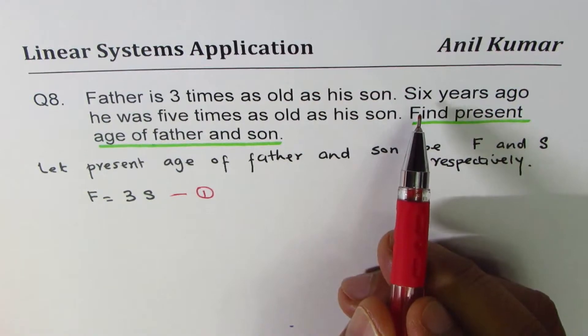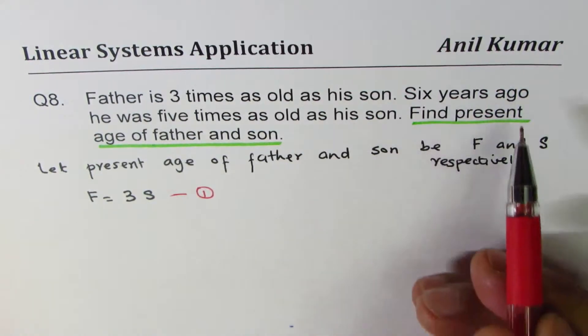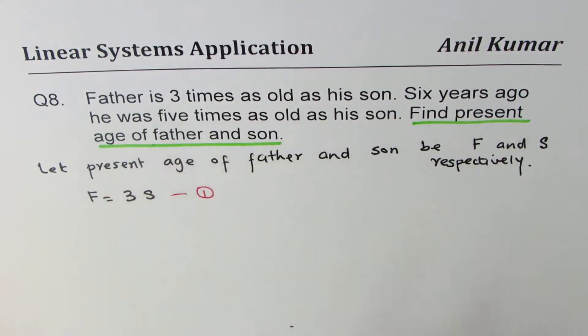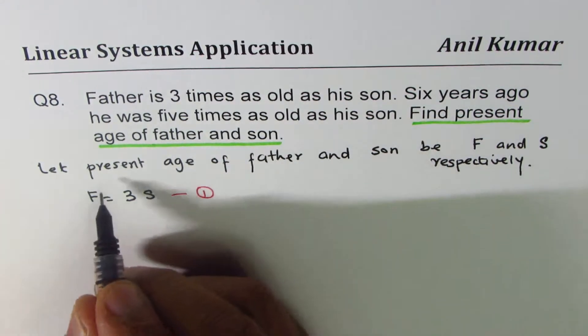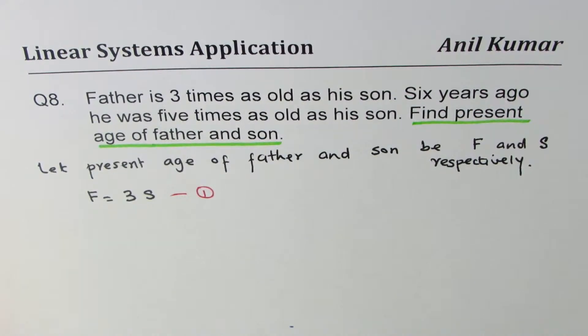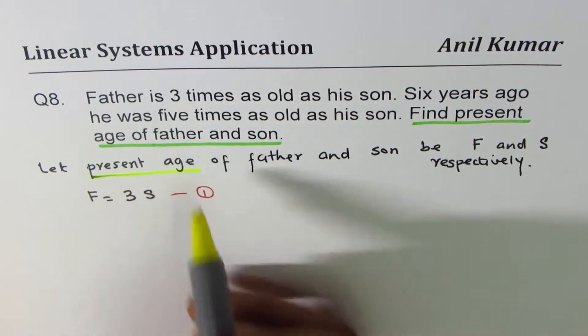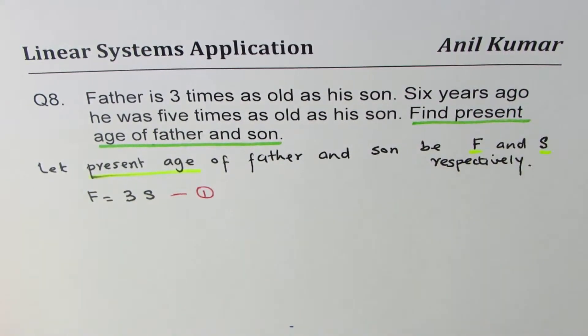The next statement is, six years ago he was five times. Now that's the difficult part. Present age we are saying, let me highlight this word. Present age is F and S. So what was the age six years ago?